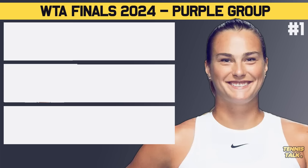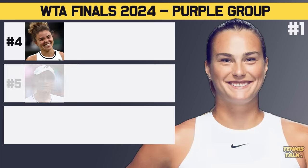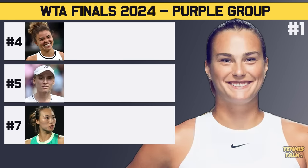We're going to start with the purple group and Sabalenka. She has drawn Paolini, Rabakina, and Zhang. So that will be the purple group with those four players involved.